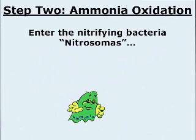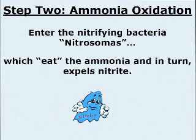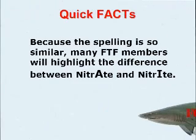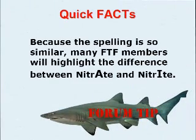Step 2: Ammonia Oxidation. Enter the nitrifying bacteria, Nitrosomas, which eat the ammonia and in turn expel nitrite. A Quick Facts Forum Tip: because the spelling is so similar, many FTF members will highlight the difference between nitrate and nitrite.